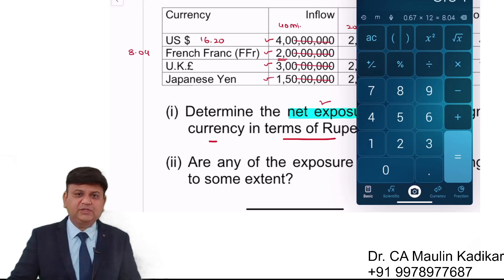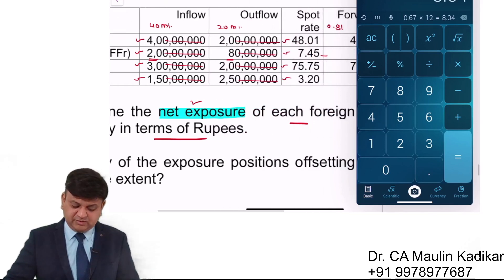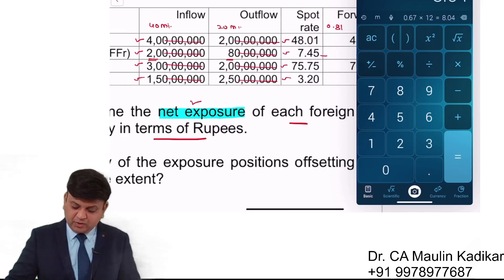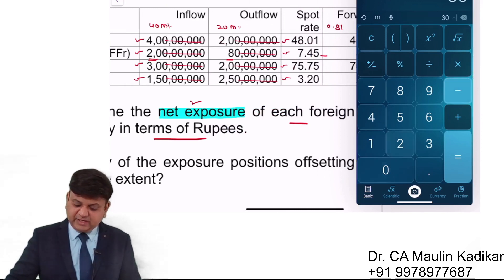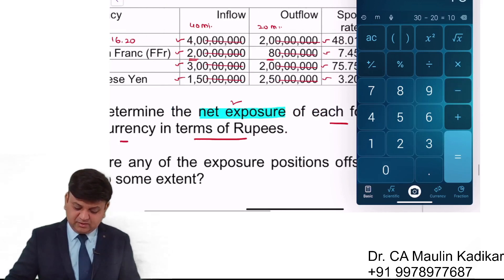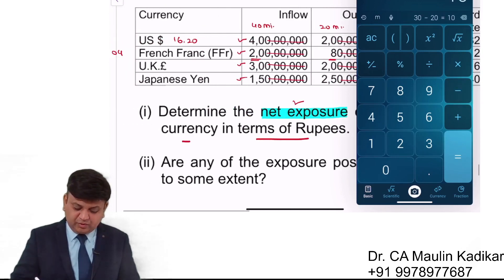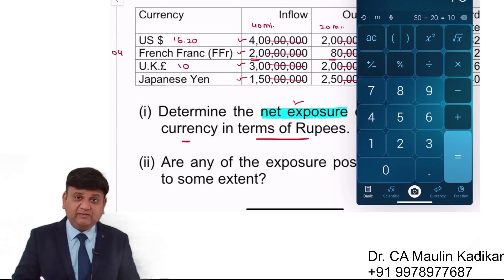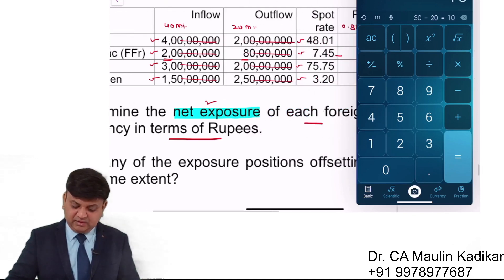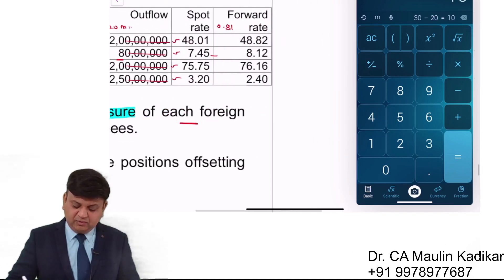How much is the profit or loss due to the transaction exposure? 30 million minus 20 million. So in Pound, you will get 10 million. The Pound currency is again appreciated.